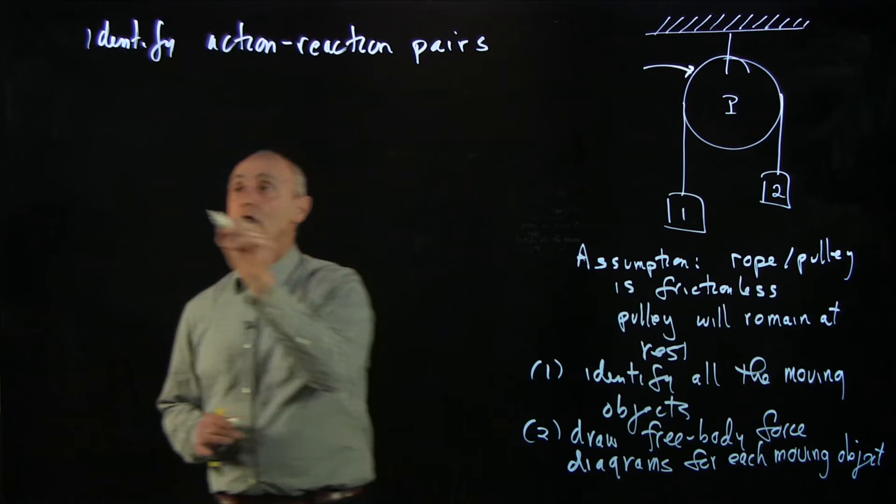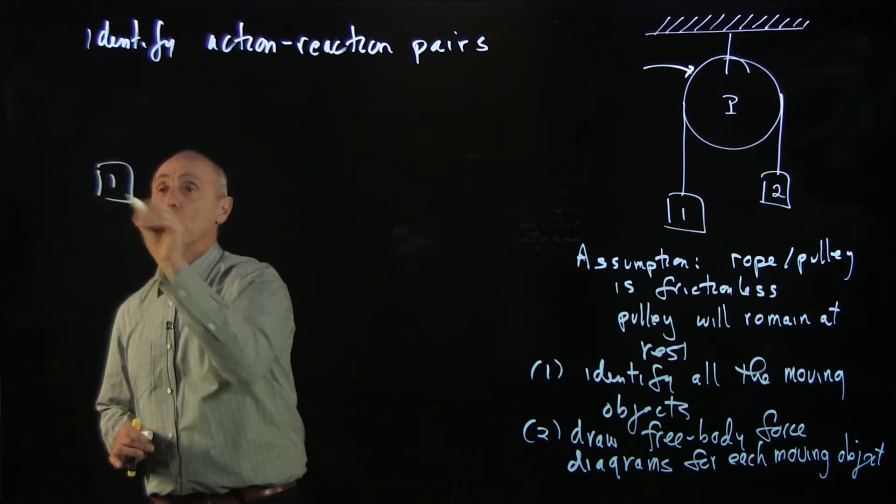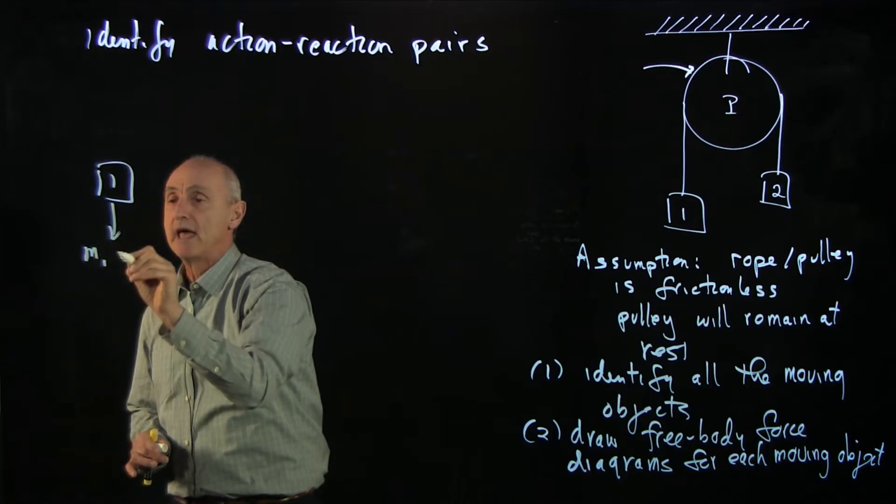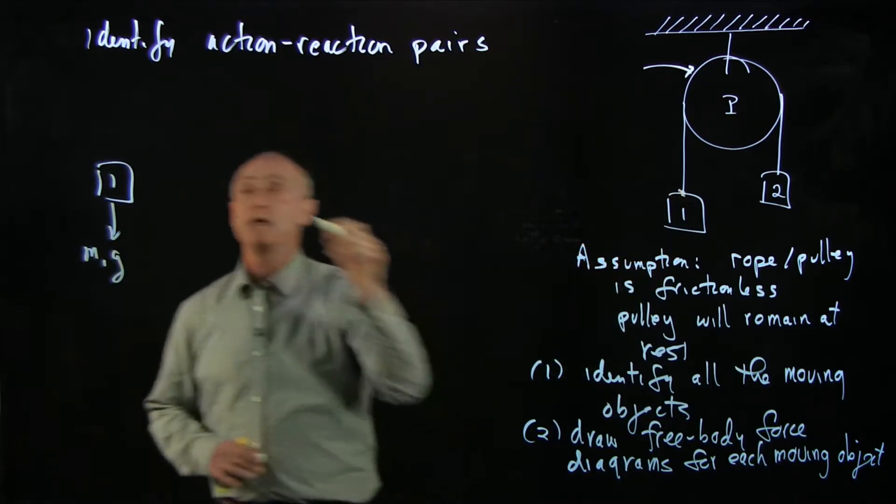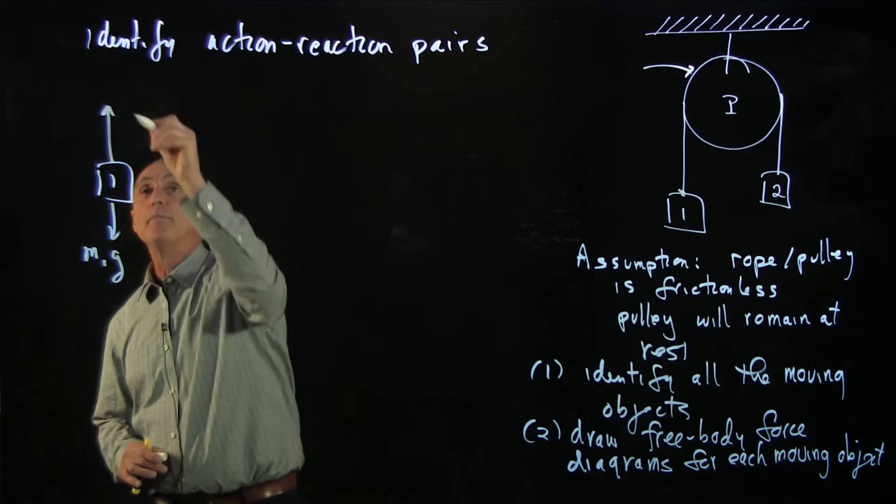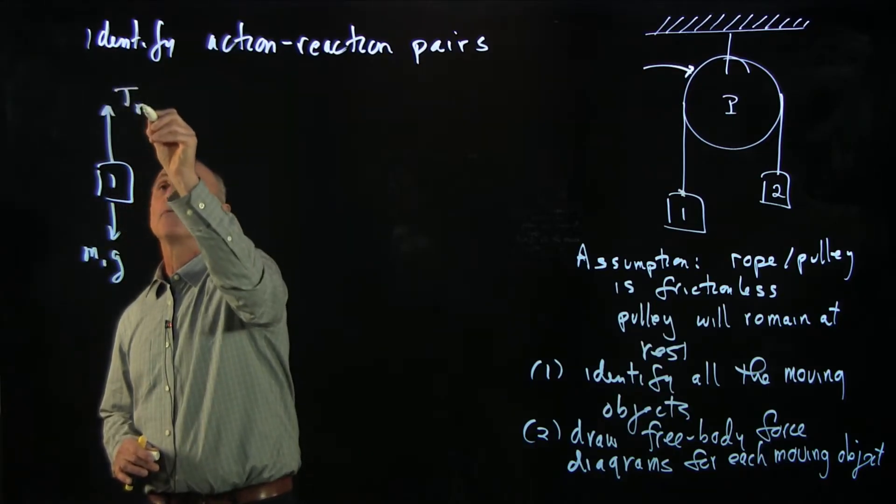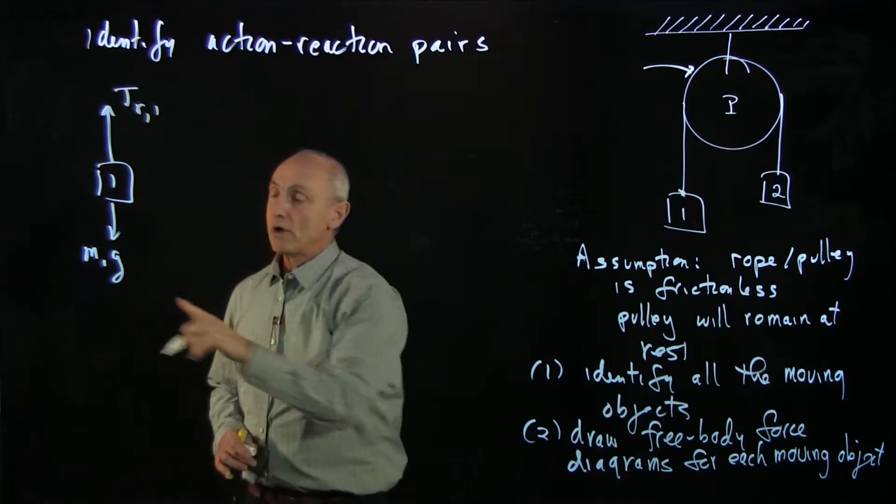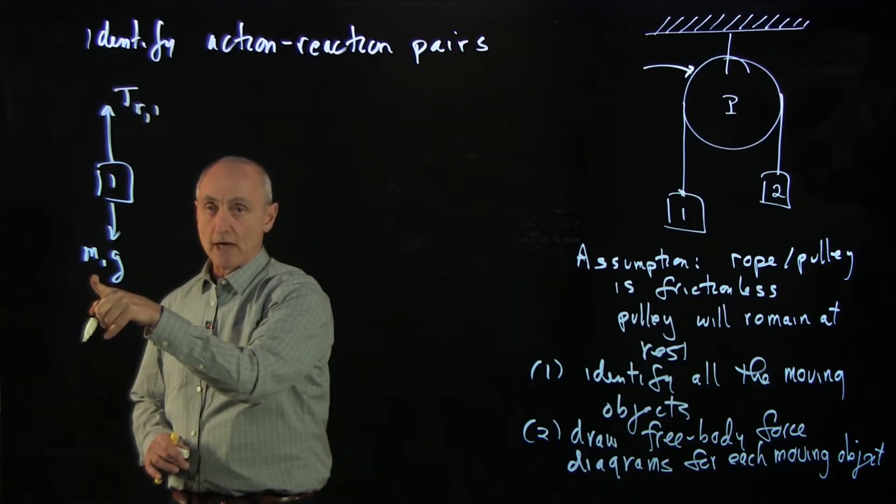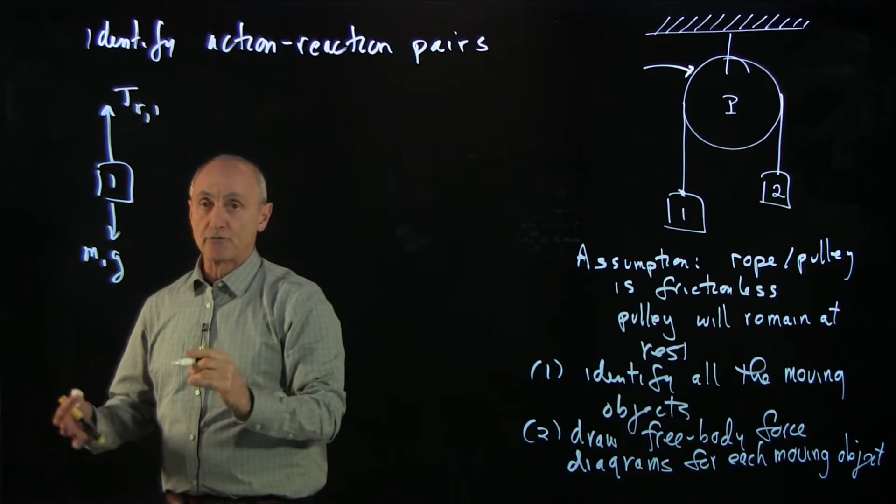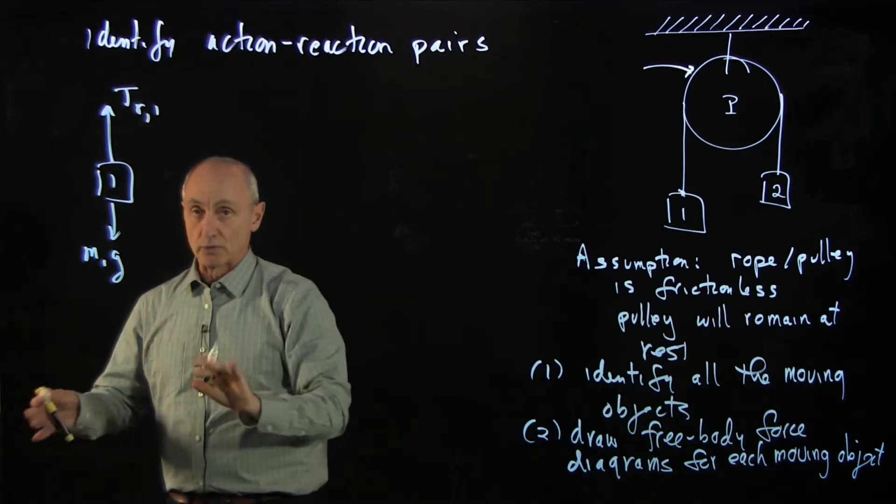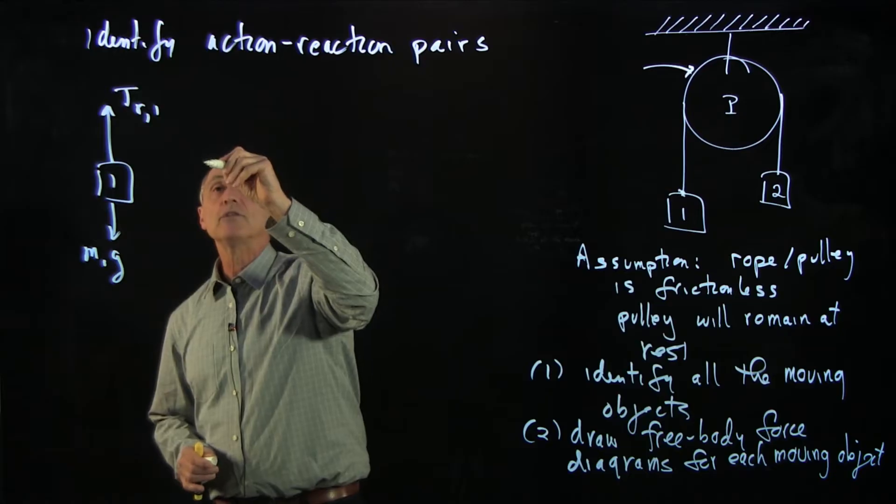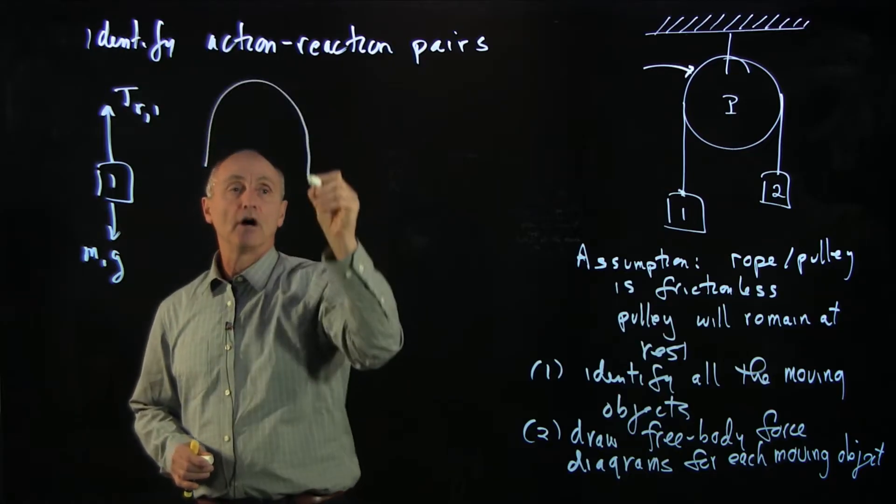I'll start with object 1. Object 1 has a gravitational force, M1g, and the rope is pulling object 1 up with the tension at the end of the rope, T-rope 1. The action-reaction pair to M1g is the force of this mass on the Earth, which we're not considering. What about the rope? Let's draw a picture of our rope.